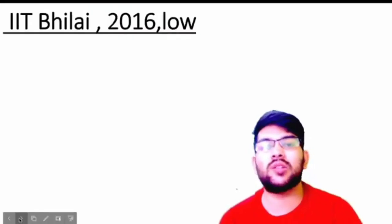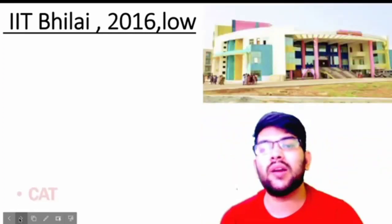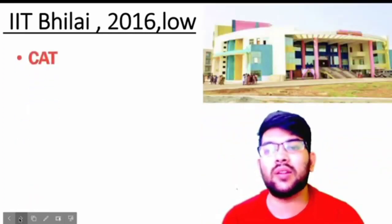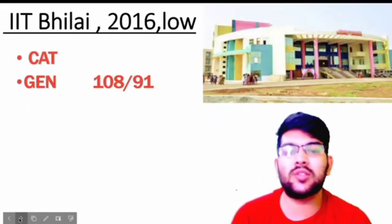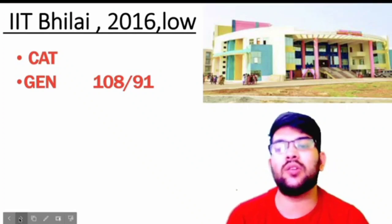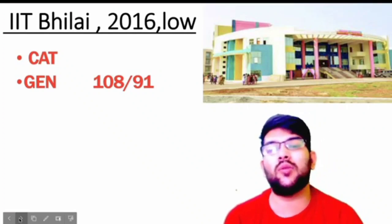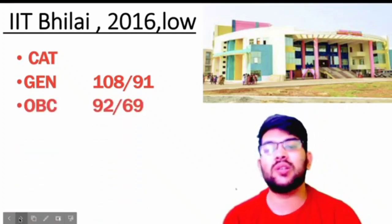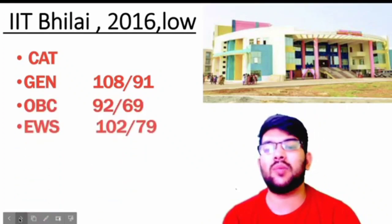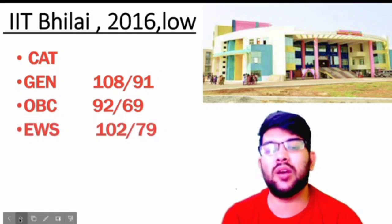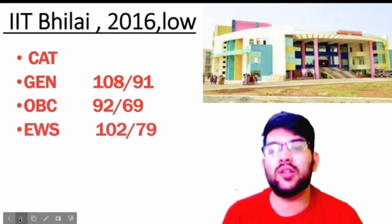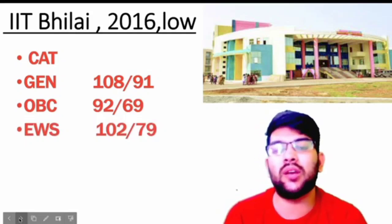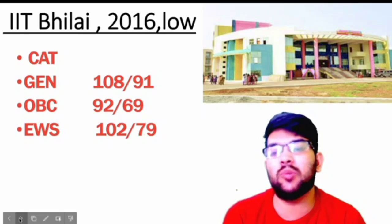The next one is IIT Pallipalayam, established in 2016. This is, I think, the lowest-ranked IIT if you compare it with the rest of the 22 IITs in India. For General: 108 and 91 marks, OBC: 92 and 69 marks, EWS: 102 and 79 marks.